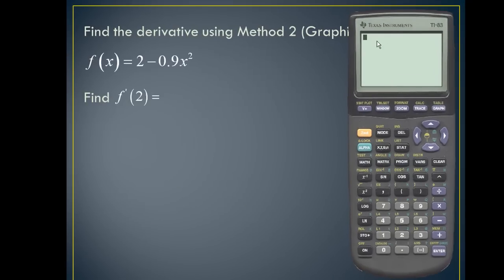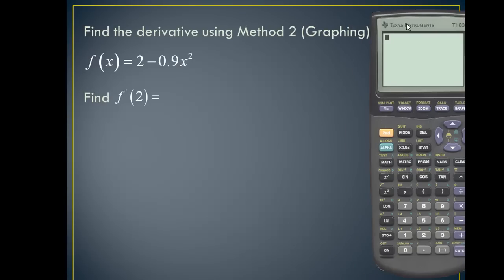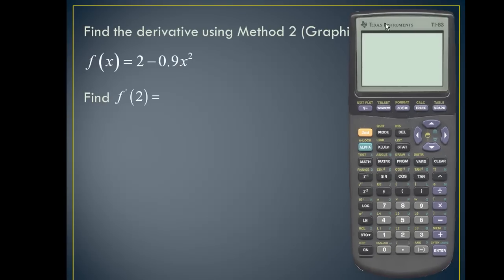Let's find the derivative using method 2, the graphing method. In this particular example, we're asked to find the derivative evaluated at x = 2 for the function 2 − 0.9x².